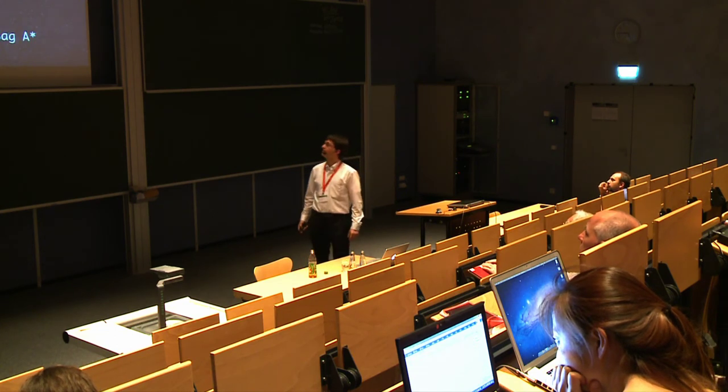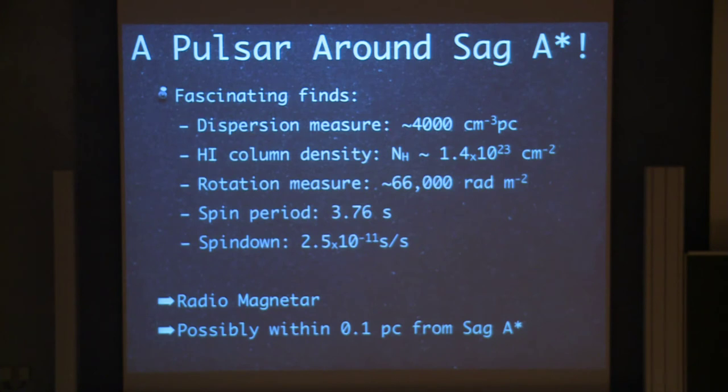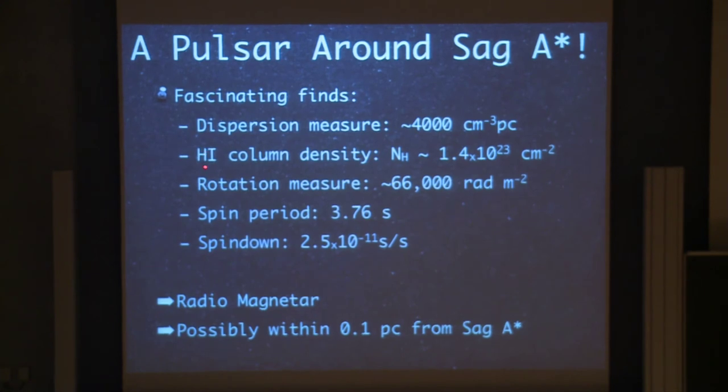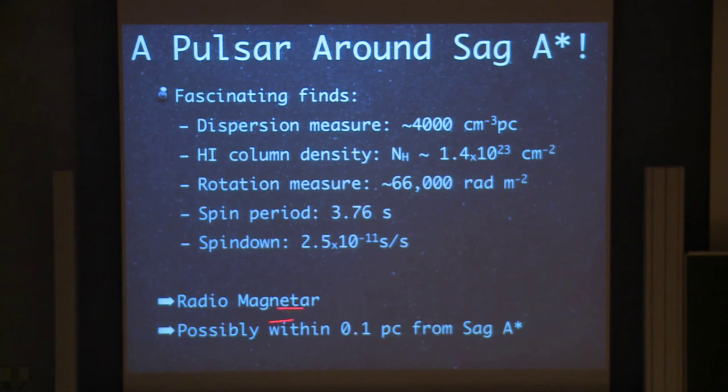The dispersion measure, which is a measure of the integrated electron density to the source, is about 4000, which is by far the largest that we have found, and that is very strongly suggestive that the source would be somewhere in the galactic center. The NH column density derived from the X-ray observations was also high enough to make such a location plausible. The rotation measure, which is a combination of the electron density and the magnetic field along the line of sight, is also extremely high by a factor of 10 higher than the highest other pulsar observations we had so far. And we were able to measure the spin period, but also the spin down rate, which means we can now identify what kind of pulsar this is. Turns out, it's a magnetar, and given that it is so far away, it may well be at the tangent point to the galactic center, so about 0.1 parsec away from Sagittarius A star.